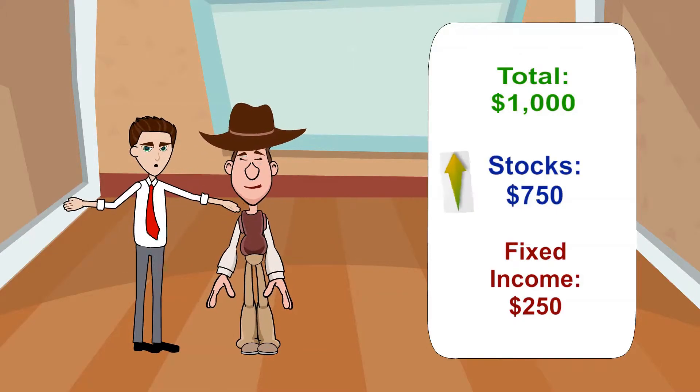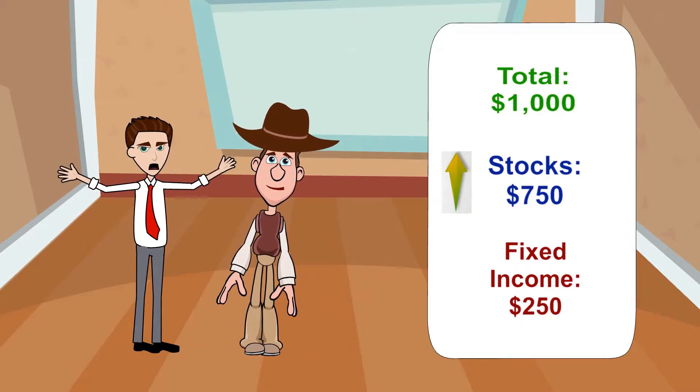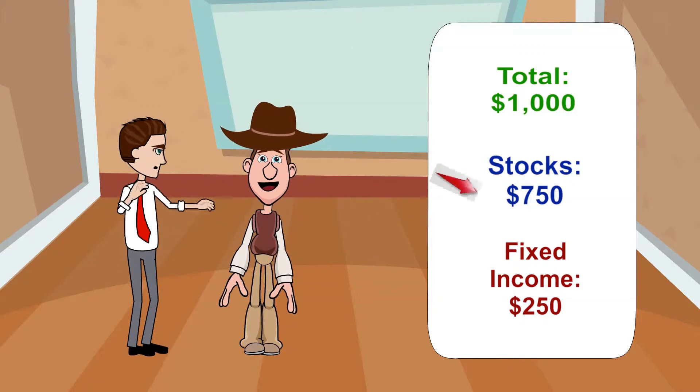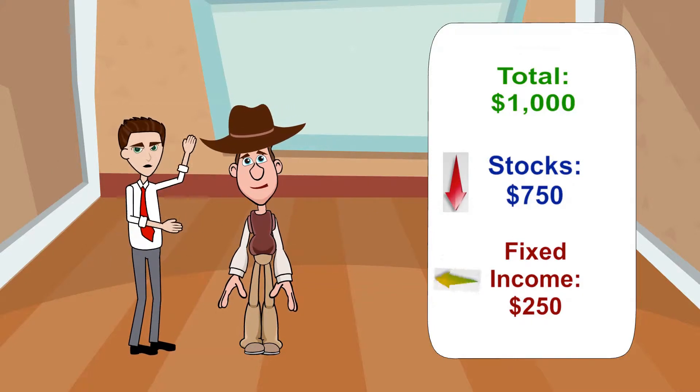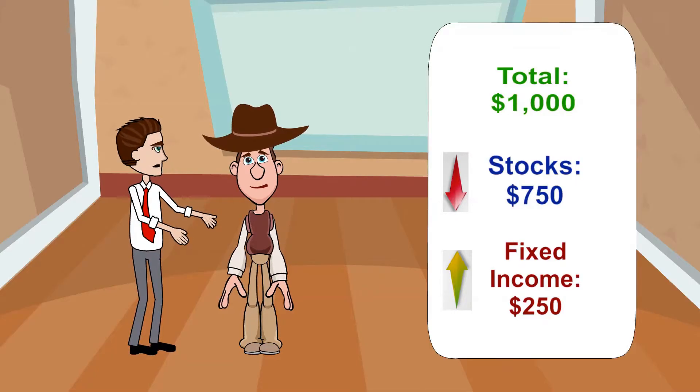This way, if stocks perform well, the bulk of your portfolio gives a great return. But if stocks do not perform too well, you still get a predictable return from your fixed income investment.